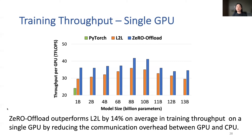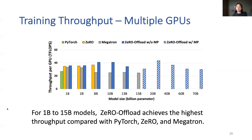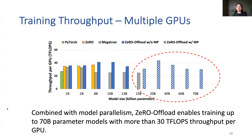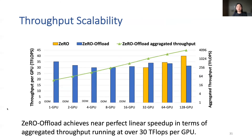This is because Zero Offload has a lower communication cost between CPU and GPU than L2L. We also evaluate training throughput with 16 GPUs, excluding L2L since its implementation does not support multiple GPU training. For 1 billion to 50 billion parameter models, Zero Offload achieves the highest throughput compared with PyTorch, Zero, and Megatron, because Zero Offload can train with a larger micro batch size. Combined with model parallelism, Zero Offload enables training up to 70 billion parameter models with more than 30 teraflops throughput per GPU. We also test training throughput of Zero Offload on up to 128 GPUs, and Zero Offload achieves near-perfect linear speedup at over 30 teraflops per GPU.